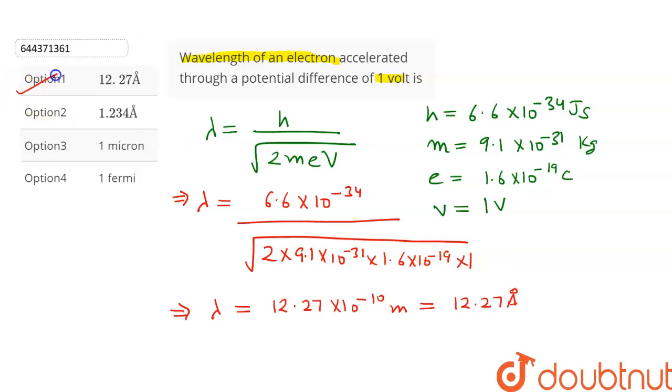So, option number 1 is the correct answer. The wavelength of electron accelerated through a potential difference of 1 volt is equal to 12.27 angstrom. Thank you.